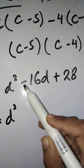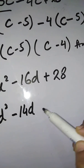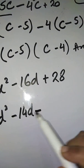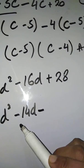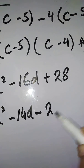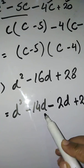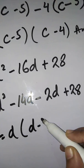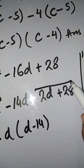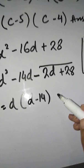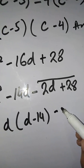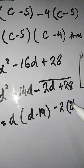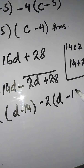Write d² as it is. The middle sign is minus, so write -14d. The second sign should also be minus because minus minus gives plus, and -14 + (-2) combined will give -16. Write -2d and then +28.